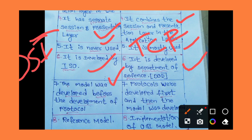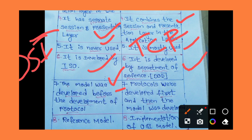For the OSI model, the model was developed before the development of protocols. Protocols are a set of rules and regulations. In contrast, for TCP/IP, protocols were developed first.